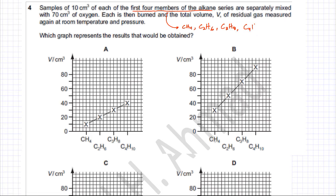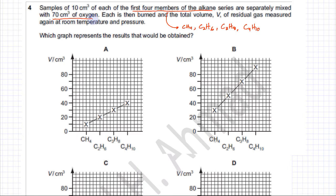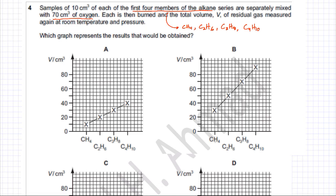These are the first four members of the alkane series, and they are separately mixed with 70 cm³ of oxygen. Each is then burned and the total volume of residual gas is measured again at room temperature and pressure. The question asks which graph represents the results — that is, the gas remaining at the end of the reaction.